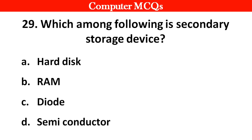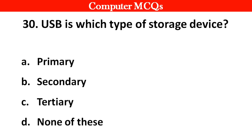Next question. Which among the following is a secondary storage device? Options A: Hard disk, B: RAM, C: Diode, D: Semiconductor. Right answer is option A: Hard disk.